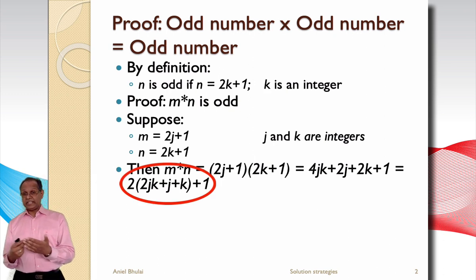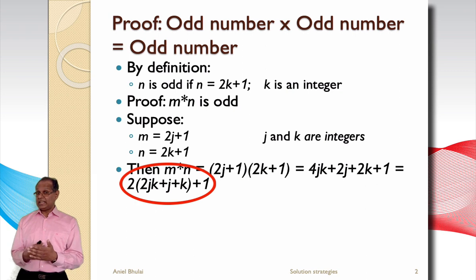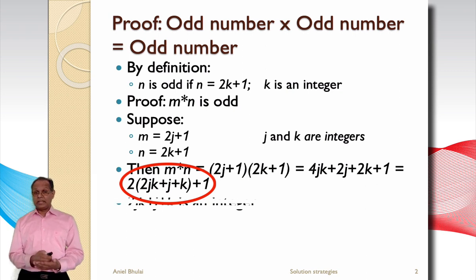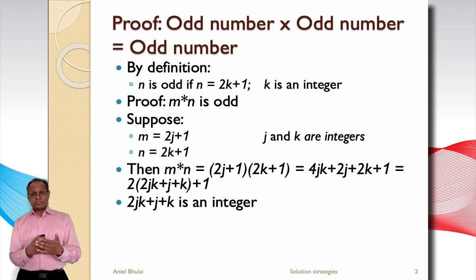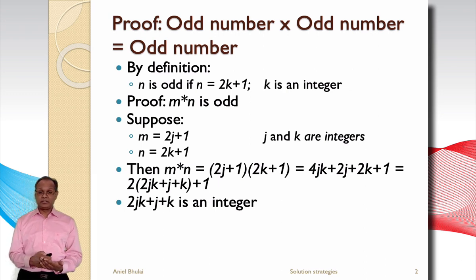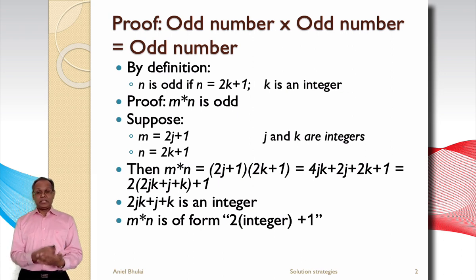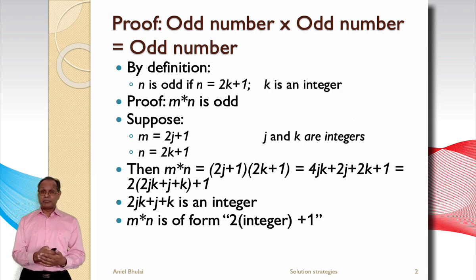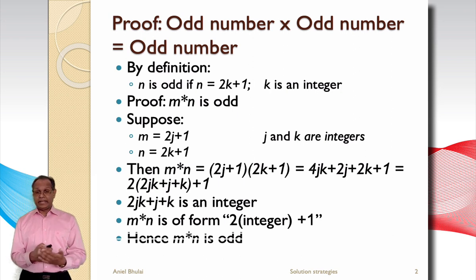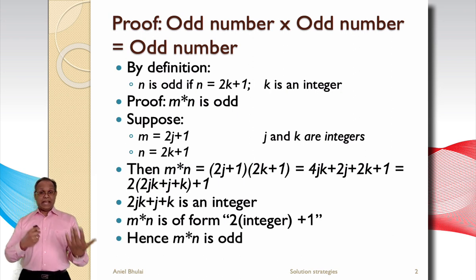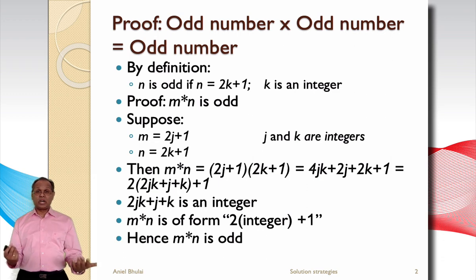jk plus j plus k plus 1. And since 2 times (jk plus j plus k) is an integer, it means that the number m times n is of the form of twice an integer plus 1. Hence m times n is an odd number.